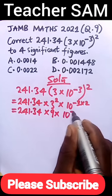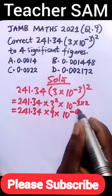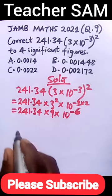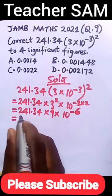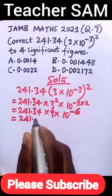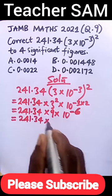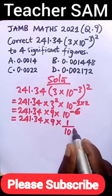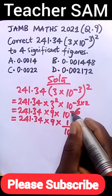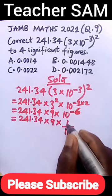This will equal 241.34 times 9 times 1 over 10^6, since a negative exponent means 1 over that base raised to the positive power.